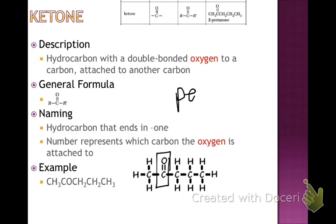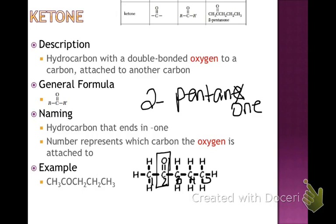With five carbons we need pent. These are all single bonds, so it's ANE — like pentane. However, we drop that E and make it ONE instead, giving pentanone. We number the carbons, and just like with alkyl groups, the lowest number goes closest to the functional group — counting from the nearest end, the double bonded oxygen is on carbon two, so it's 2-pentanone.